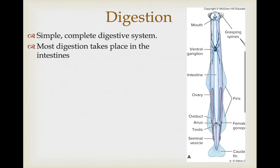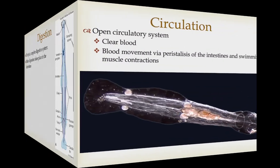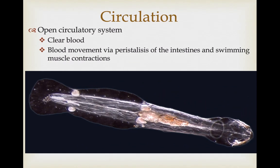They have a relatively simple but complete digestive tract: prey are brought into the mouth and most digestion takes place in a long intestinal tract. They have an open circulatory system and clear blood, which is important for maintaining their body's translucency. There is no real heart — blood movement is driven by peristaltic actions of the intestines during feeding and by the contractions of the swimming musculature.